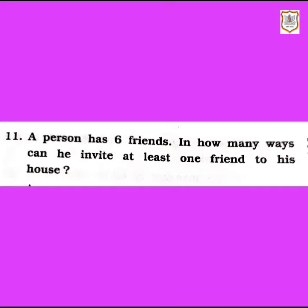Hello dear students, welcome back to e-classes of statistics standard 11th. In this video we will be continuing exercise 6.2 with sum number 11. Let's read question number 11: a person has six friends, in how many ways can he invite at least one friend to his house? Here in the question it is mentioned 'at least one'.